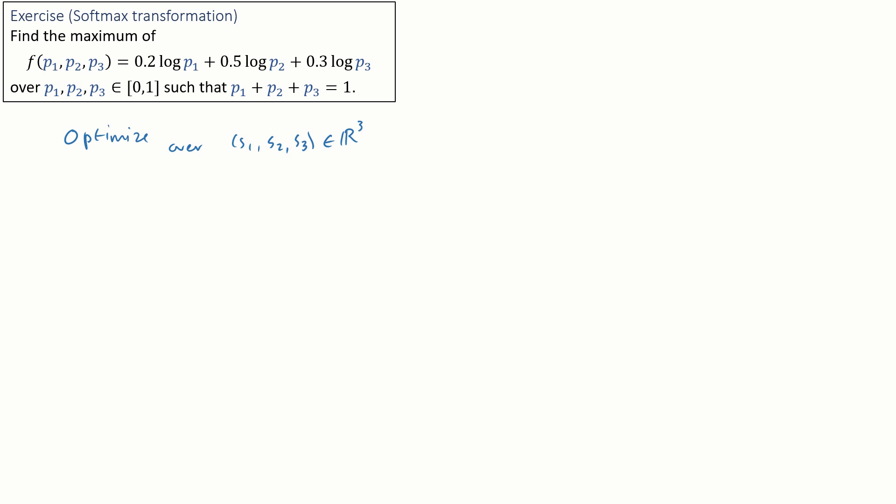What we'll do instead is we'll optimize over different parameters s1, s2, s3 in reals cubed and use the following transform. Here the exponentiation ensures that we get positive values even if s is negative, and the normalization—the division—forces p1 plus p2 plus p3 to be equal to one. Because they're positive and because they sum up to one, each must be less than or equal to one. And if you just look at this transform, we can see any p we can achieve by choosing a suitable s, so we're not limiting ourselves by this transformation.